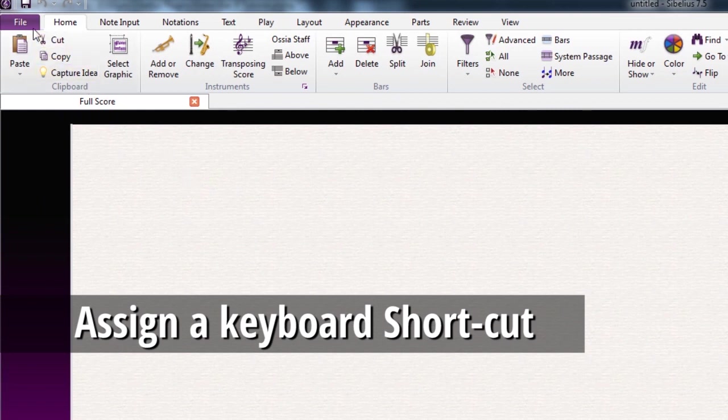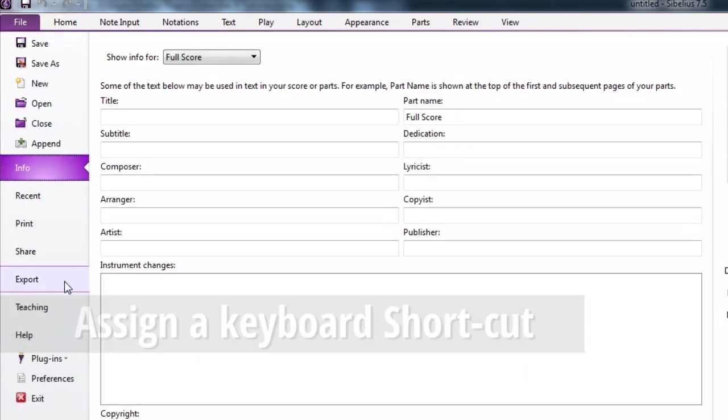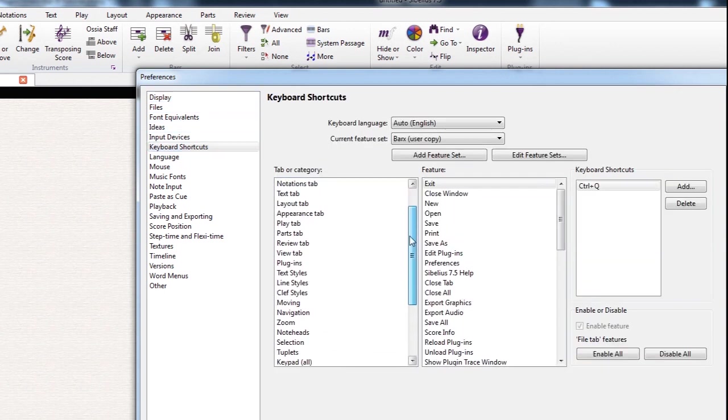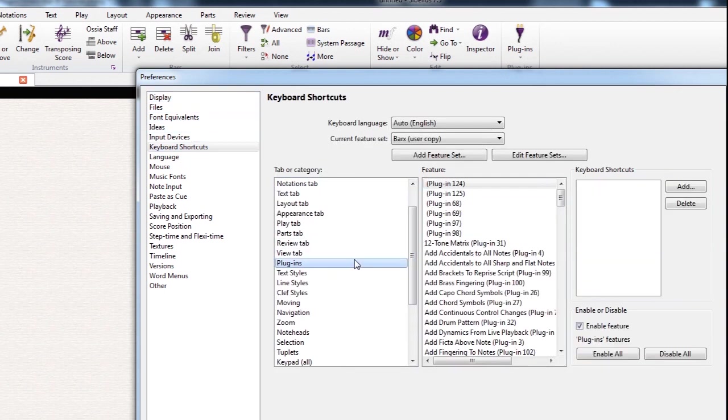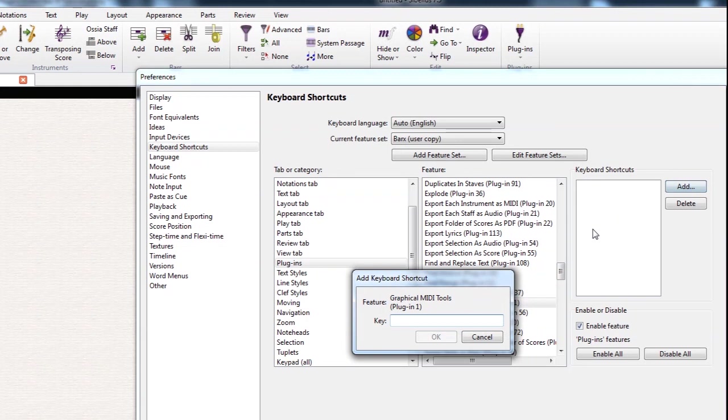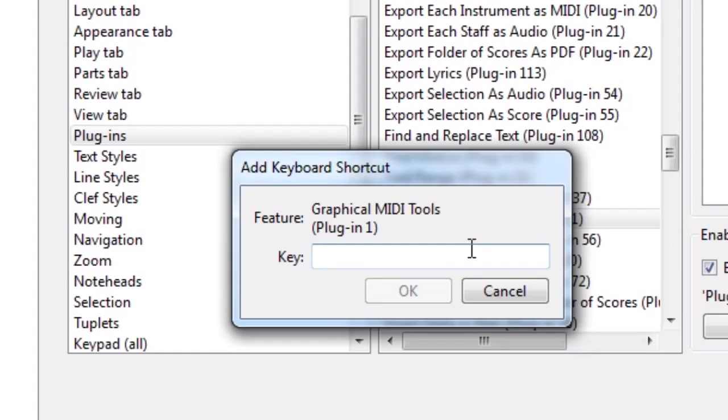So, for our second step, we'll go to the File tab, Sibelius Preferences, look for keyboard shortcuts, then select the Plugins category, and search for Graphical MIDI Tools. Now, assign a key to the plugin. It's very important here that you don't use a combination of Shift with a key, but rather a single and plain key, otherwise it will result too uncomfortable. Don't worry if you find that most keys are already taken, just pick one you don't use often and overwrite it. In my case, for example, I never used the W, so I picked that key.